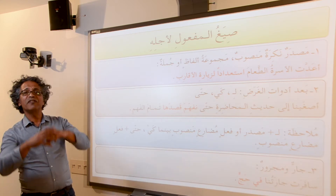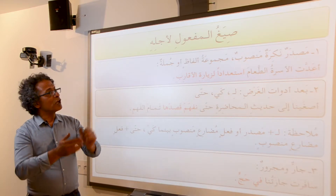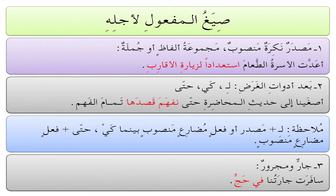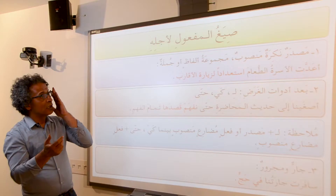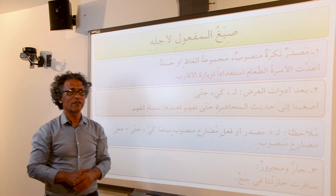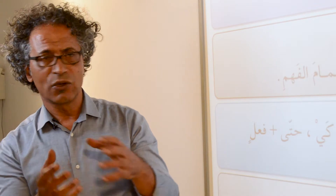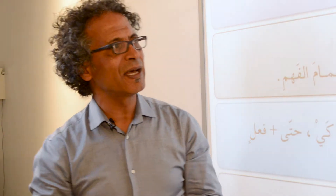صيغ المفعول لأجله — so what forms does it take? It takes three main forms: يمكن أن يكون مصدراً نكرةً منصوباً، أو مجموعة ألفاظ، أو جملة. So it could be an indefinite مصدر منصوب, it could also be a phrase, or it could be a sentence. For example: أعدّت الأسرة الطعام استعداداً لزيارة الأقارب — the family prepared the food in order to get ready for the visit of the relatives. So استعداداً لزيارة الأقارب is the المفعول لأجله here.